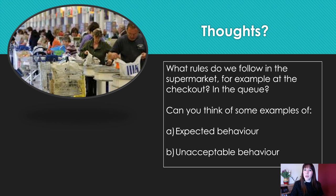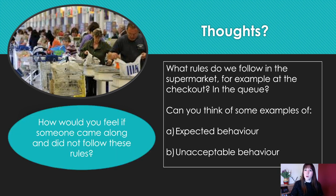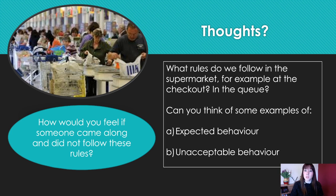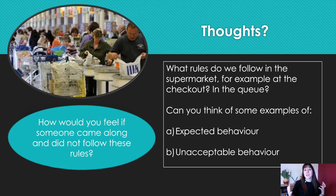I'm going to set you a padlet and I would like you to share your thoughts on a couple of examples. The first example is supermarkets. What is expected and not expected behaviour when shopping in a supermarket? What rules do we follow — for example, at the checkout or in the queue? Can you think of some examples of expected behaviour, and can you give examples of unacceptable behaviour? How do you feel if people don't do this? The obvious example is you're in the queue and someone jumps ahead of you. Do you say something? Do you say, 'Excuse me, I was next'? Do you expect the checkout person to notice and say something? How do you deal with that situation?